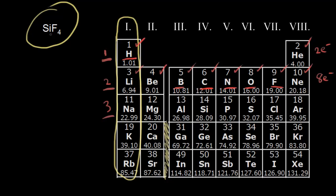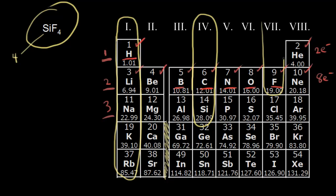Getting back to our molecule, silicon tetrafluoride — to find the total valence electrons, I find silicon on the periodic table and see it's in group four, so one silicon atom has four valence electrons. Fluorine is in group seven, so each fluorine atom has seven valence electrons, and I have four of them. Seven times four gives 28 valence electrons for fluorine. The total is 28 plus 4, so we need to account for 32 valence electrons in this dot structure.